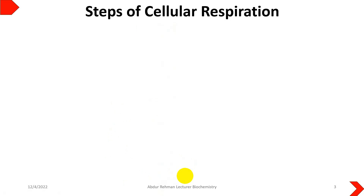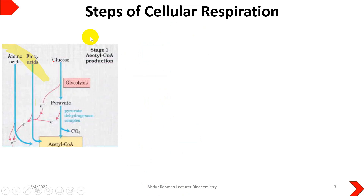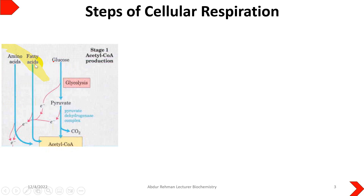When we talk about cellular respiration, it consists of three stages. The first stage is the conversion of energy-rich or complex molecules into their simplest form. Acetyl-CoA is the common intermediate to all three biomolecules: amino acids, fatty acids, and glucose.